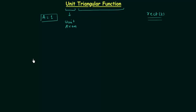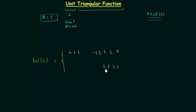We represent any triangular function by tri inside the parenthesis t. In the case of unit triangular function, tri(t) is equal to t plus 1 when time t is between minus 1 and 0, and tri(t) is equal to minus t plus 1 when t is between 0 and 1. You can see we have equations of straight lines — this is the first line and this is the second line — and by using this definition we can easily plot the waveform of unit triangular function.